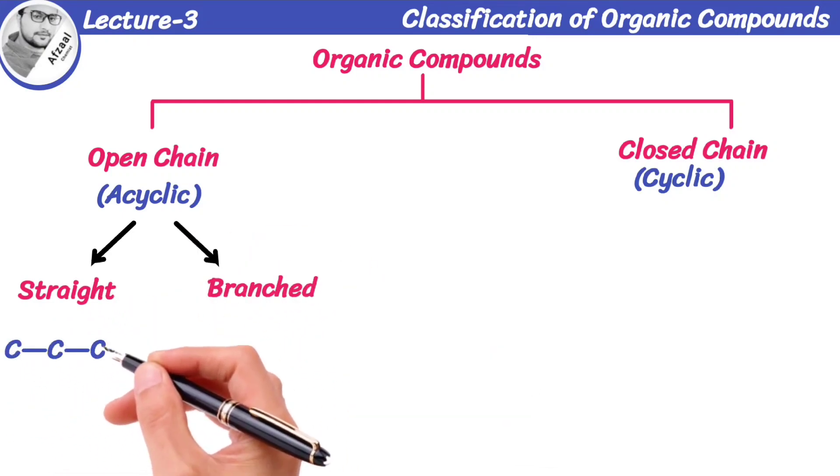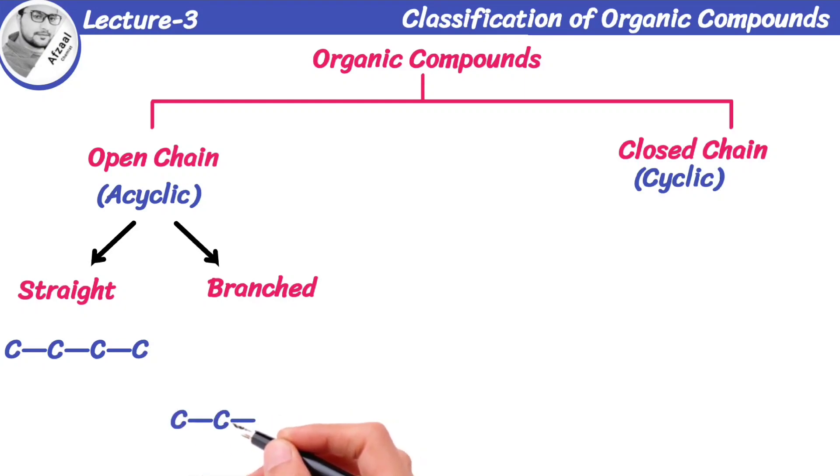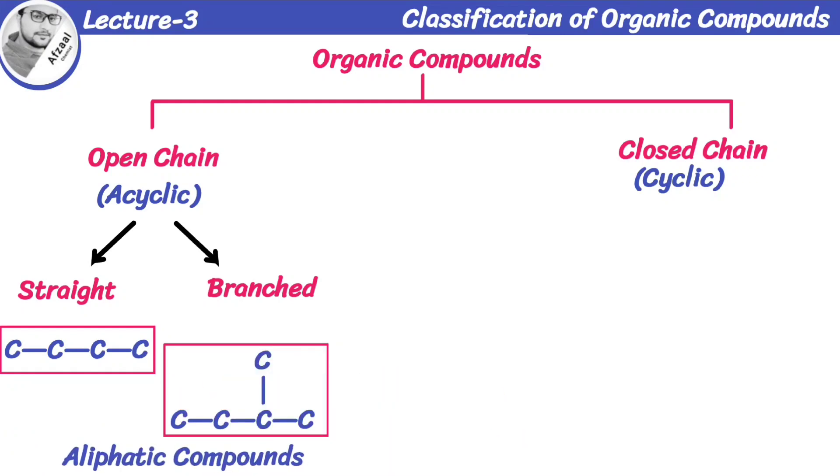For example, straight-chain compounds are those in which carbon atoms link with each other through covalent bonds and form a straight chain, while branched-chain compounds are those in which there is a branch along a straight chain. Open-chain compounds are also called aliphatic compounds.